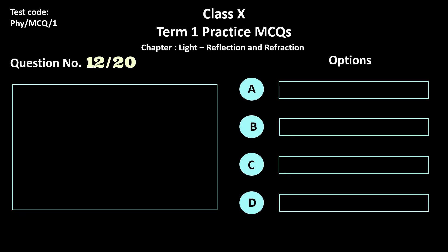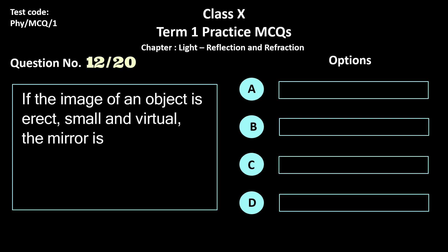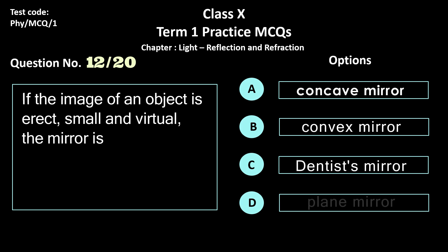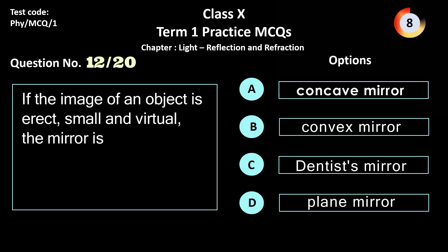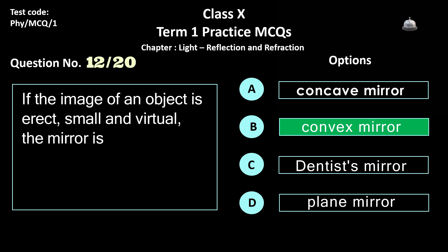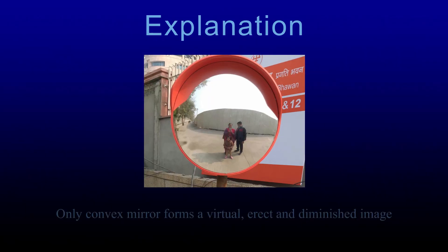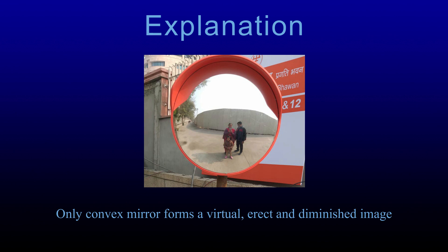Question 12. If the image of an object is erect, small and virtual, the mirror is — options: a) concave mirror, b) convex mirror, c) dentist mirror, and d) plane mirror. The correct answer is convex mirror. Only a convex mirror forms a virtual image which is diminished, that is smaller than the object.